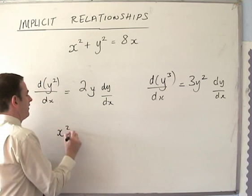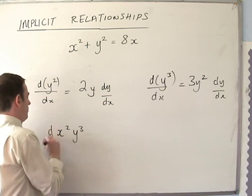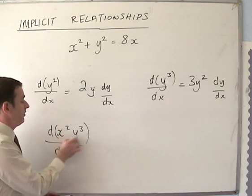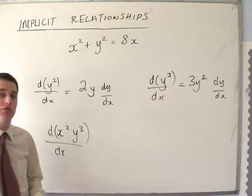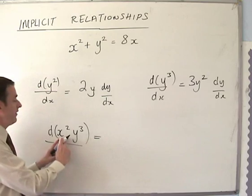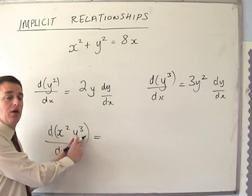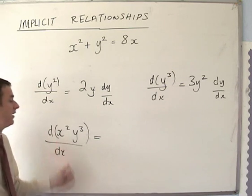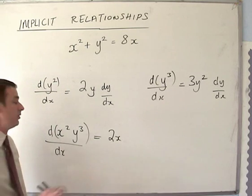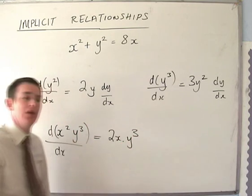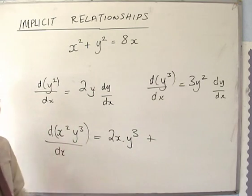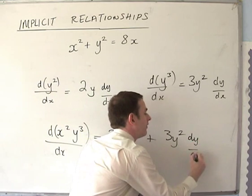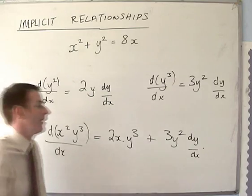For example, find the differential of x squared times y cubed — these two things are both multiplying each other. Using the product rule, that's equal to the differential of x squared times y cubed left alone, plus the differential of y cubed times x squared left alone. The differential of x squared is just 2x, left alone with y cubed. Then plus 3y squared times dy/dx, multiplied by x squared left alone.